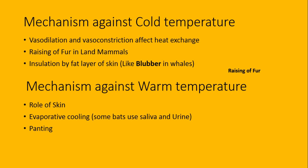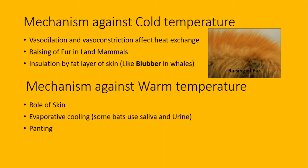Mechanism against cold temperature: ایک تو vasodilation یا vasoconstriction جو heat exchange کو effect کرتی ہے۔ اور raising of fur in land mammals - cold temperature میں mammals کی fur کھڑی ہو جاتی ہے، کھڑی ہونے کی وجہ سے یہ اپنے اندر air کو trap کرتی ہے جو insulation کا کام کرتی ہے۔ Insulation میں heat conduction وہاں پر رک جاتی ہے۔ Whales کے اندر blubber کی form میں ایک fat کی layer ہوتی ہے that provides insulation۔